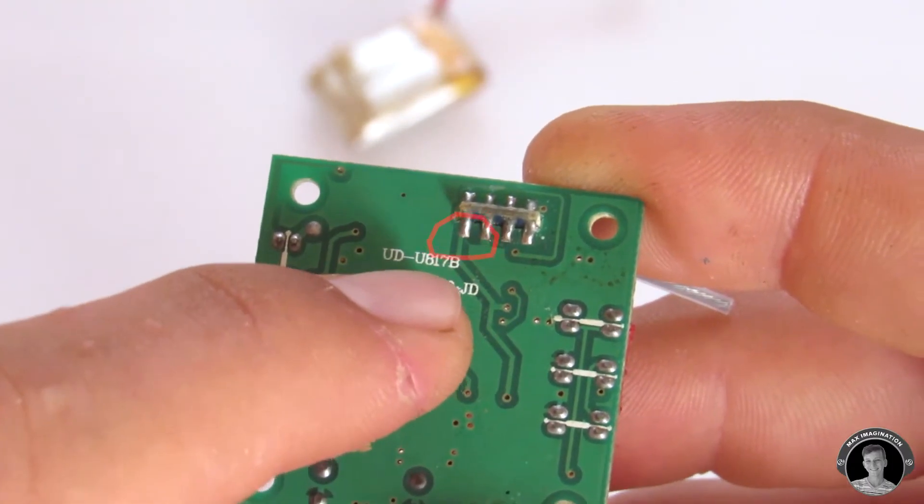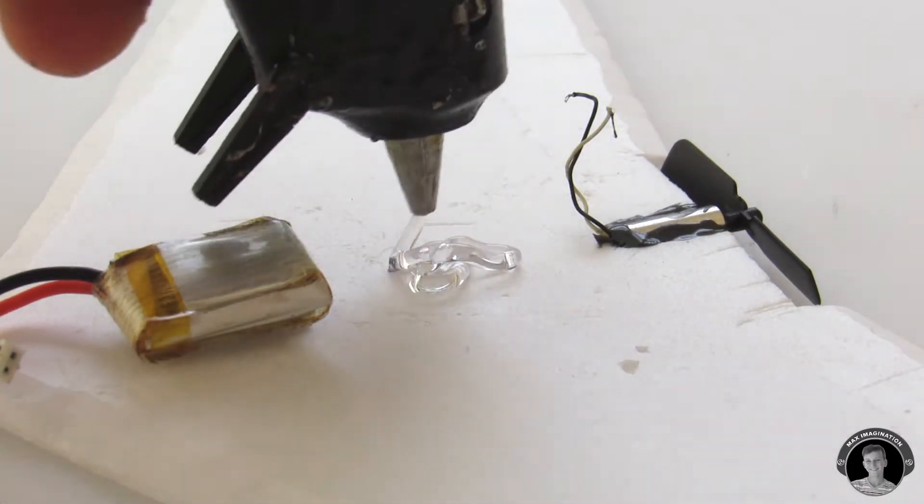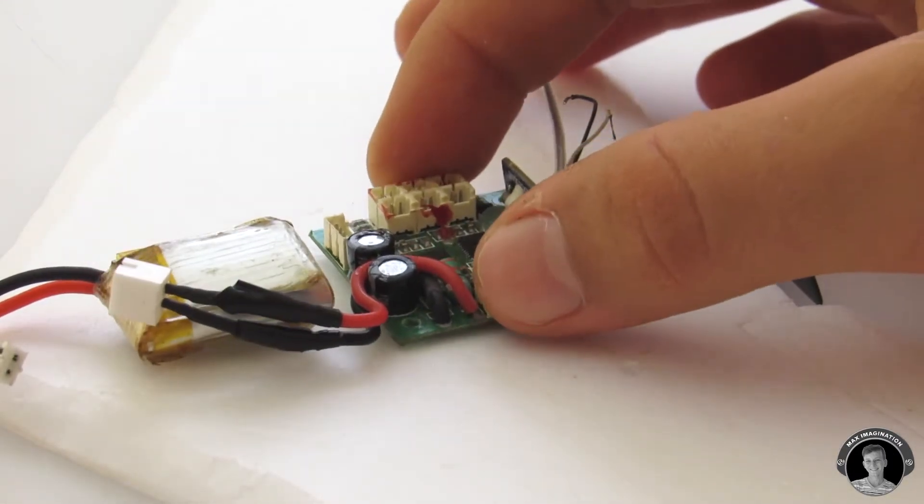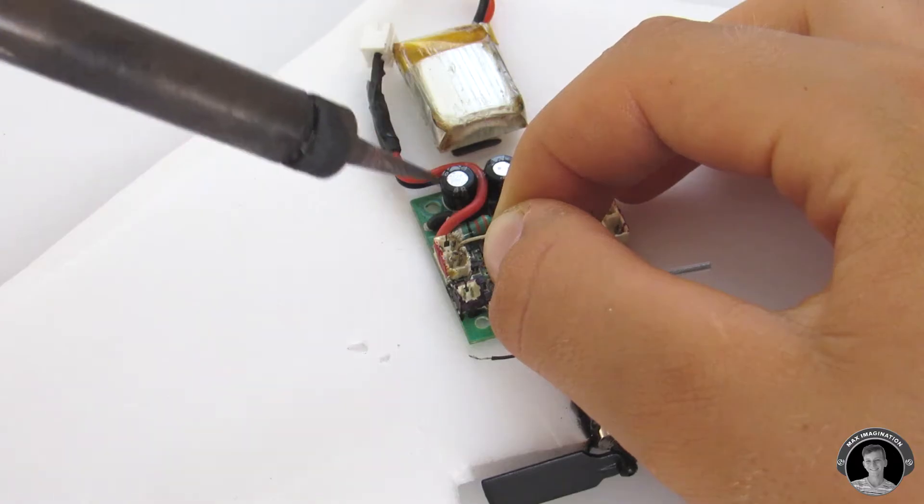In case you're wondering, here's the model number for the receiver so you can find it online. Now I'm going to solder two wires going from the motor to the receiver.